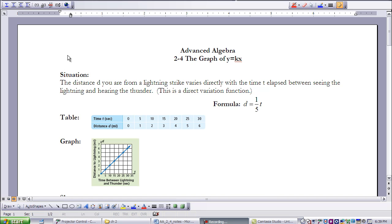This situation is a direct variation function, and it has a formula that corresponds to it. It's D equals one-fifth T. So what that formula stands for is the distance D you are from a lightning strike varies directly with the time T elapsed between seeing the lightning and hearing the thunder.